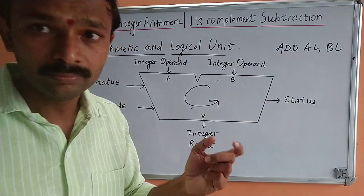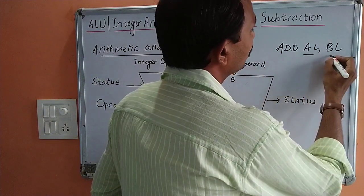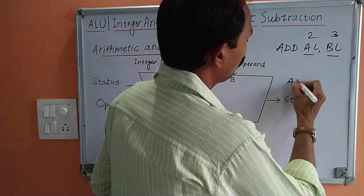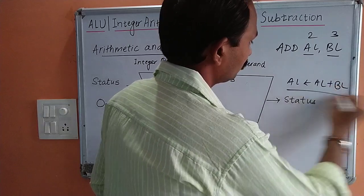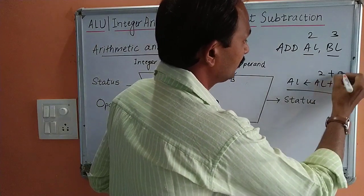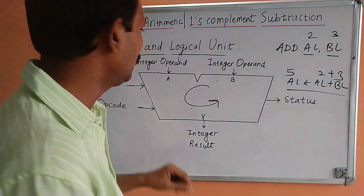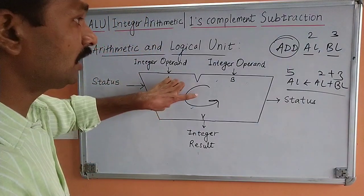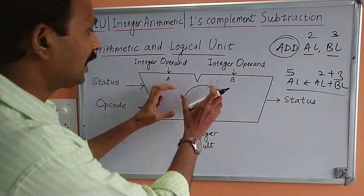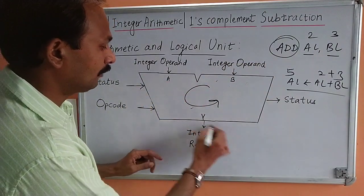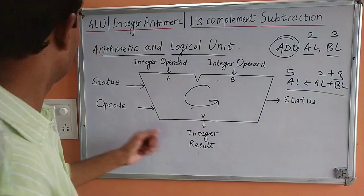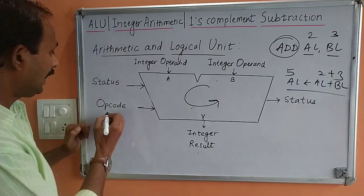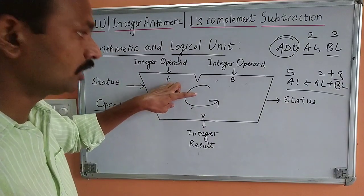What does this instruction do? This adds the contents of the AL register with the BL register. Let us say they have the contents 2 and 3 currently. What it will do is store the result inside the AL register. So 2 plus 3 will happen and the result will be saved inside the AL register. These are the integer operands and ADD is the instruction, so the addition operation will happen here and we will get the result — that will be nothing but the integer result. While doing the operation, the status of the operation will be maintained inside the status register and the opcode of those instructions will be utilized.